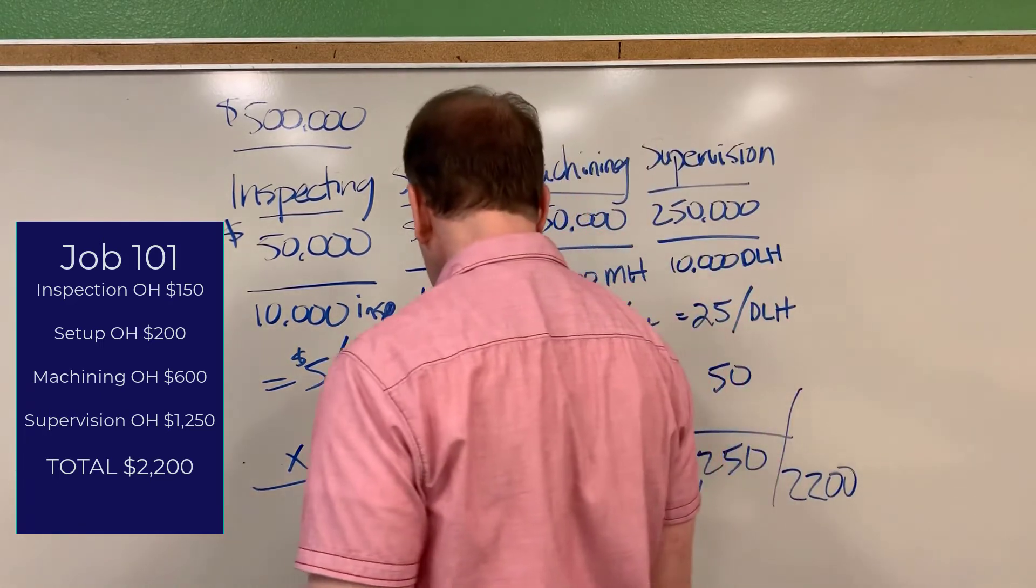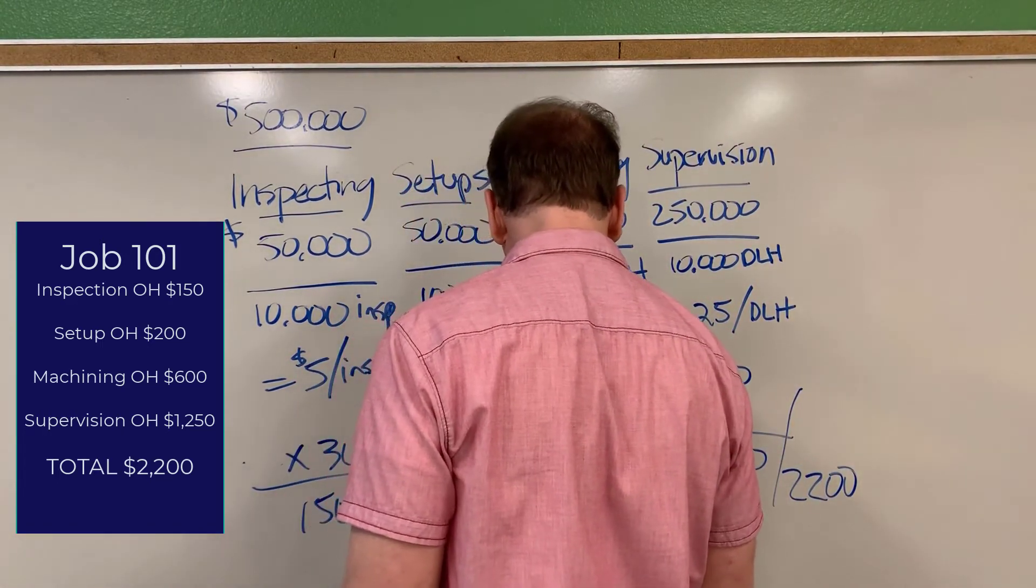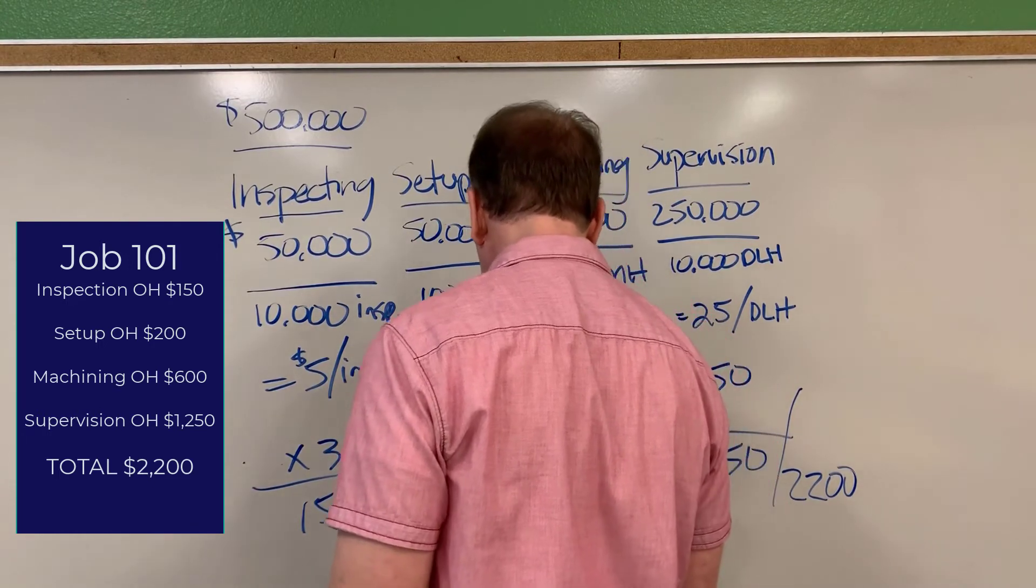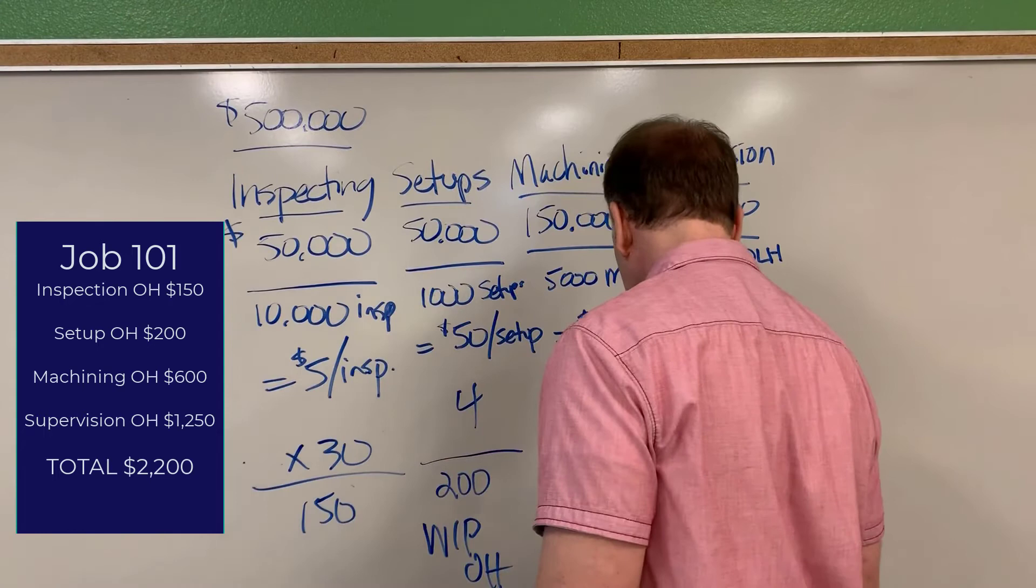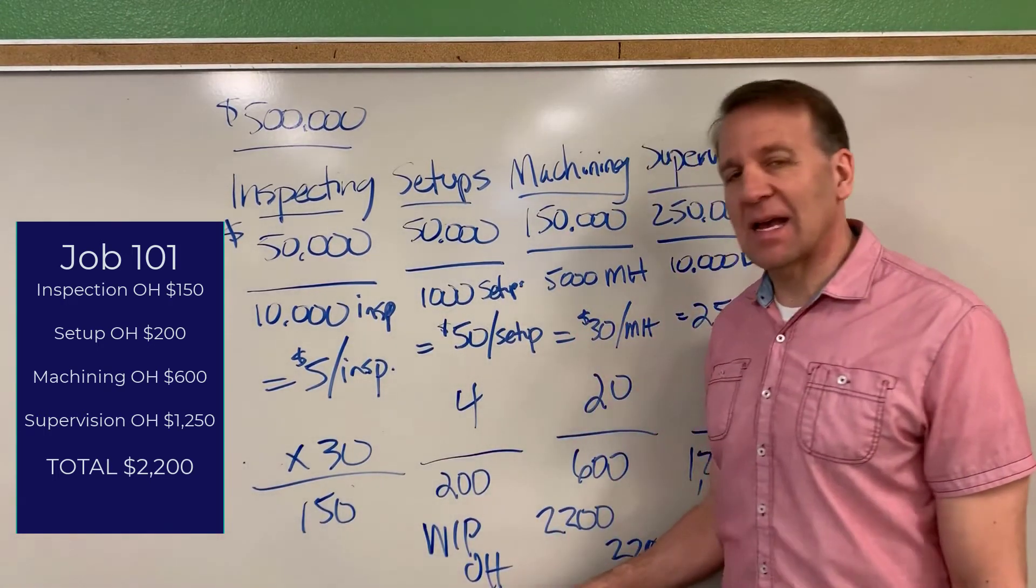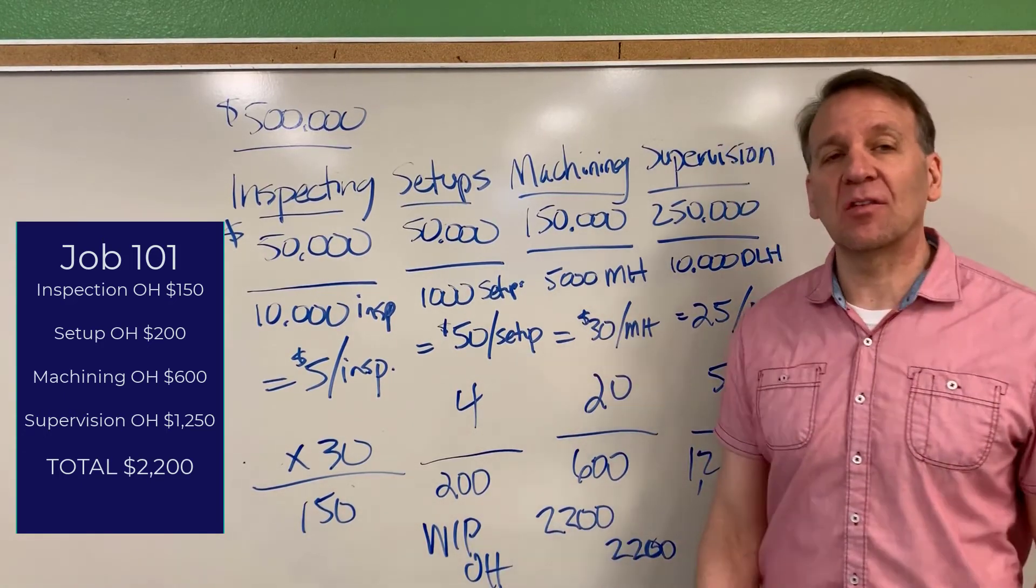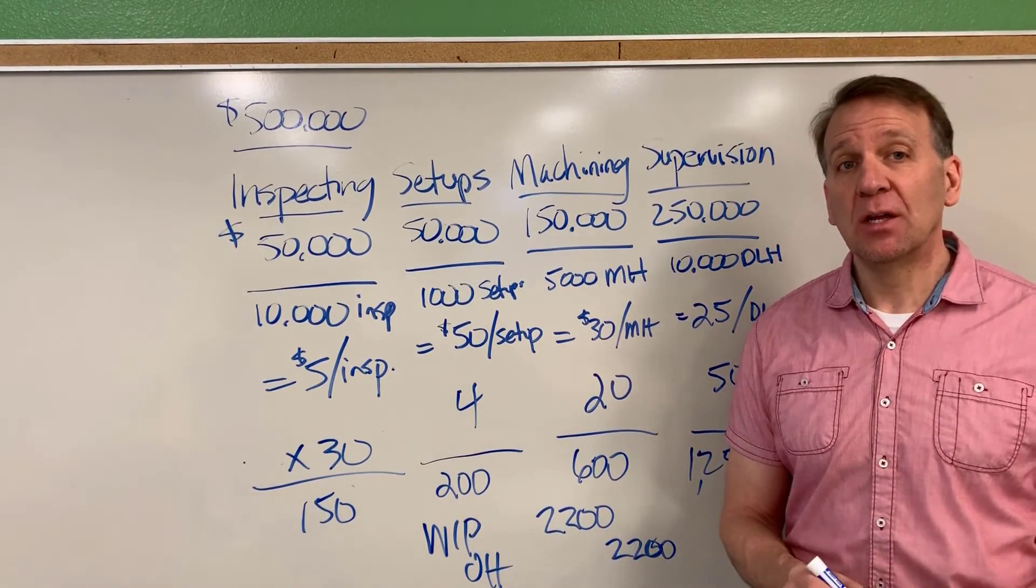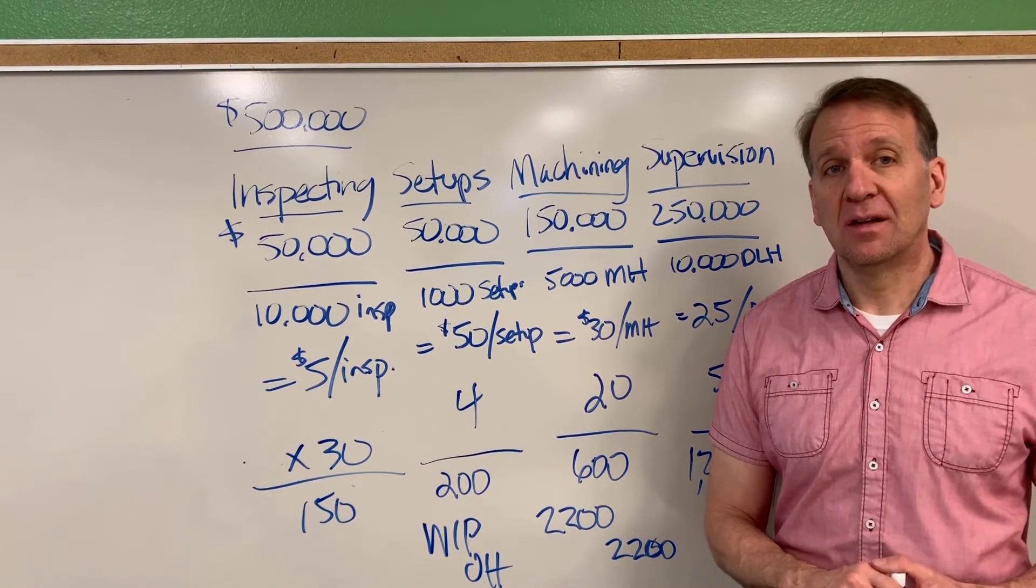So what we would do, the journal entry would be to debit work in process $2,200 and credit the overhead account $2,200. Because we're allocating, we're taking the costs out of overhead and allocating them into work in process. So that would be our journal entry to move these costs into work in process.